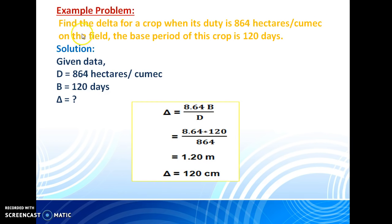Let us consider one example problem. Find the delta for a crop when its duty is 864 hectares per cumec on the field. The base period of this crop is 120 days. For this problem, the solution is: